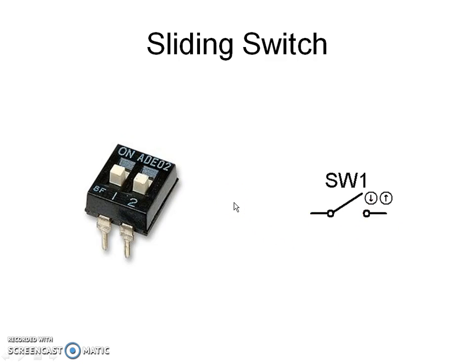Sliding switches in dual-in-line pack are commonly used in microcontroller based systems. The basic difference between a push button and a sliding switch is: when it is required to maintain the connection between the two terminals of a push button, it is required to press and hold the push button. On the other hand, putting the sliding switch in the on position maintains the electrical connection between its two terminals.